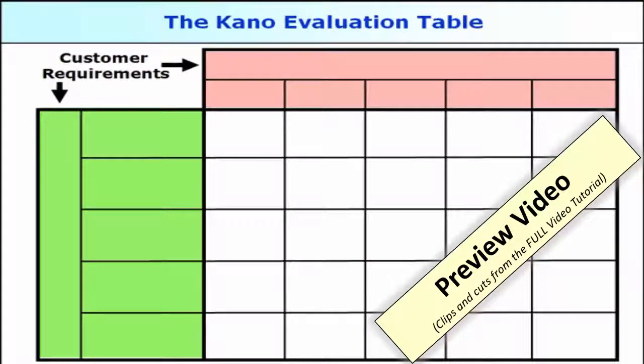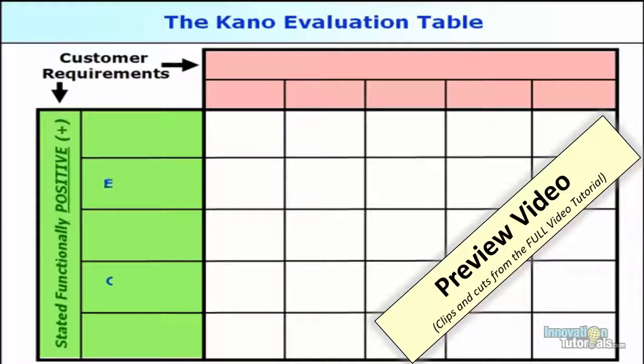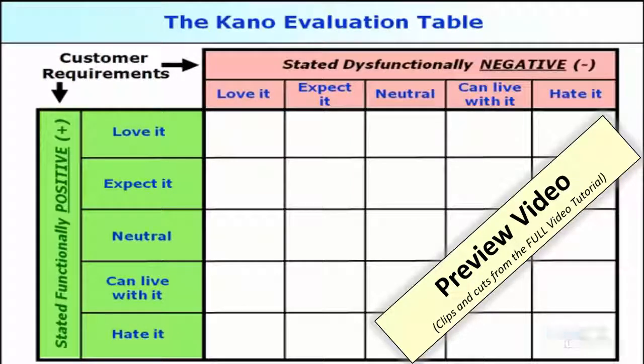This is the Kano evaluation table, which decodes the responses into the proper classification. On the left side are the functional responses, and along the top are the dysfunctional responses.